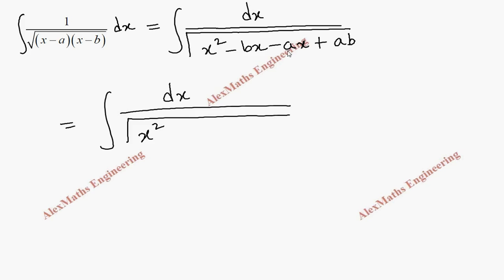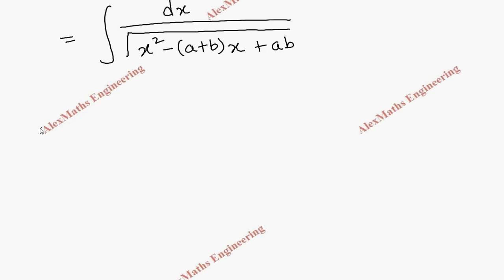After rearranging: x² − (a+b)x + ab. We are going to do completing the square for this expression. The coefficient of x² is 1, so nothing to take common. We write x, put the same sign, write half of (a+b) which is (a+b)/2, and put a whole square.